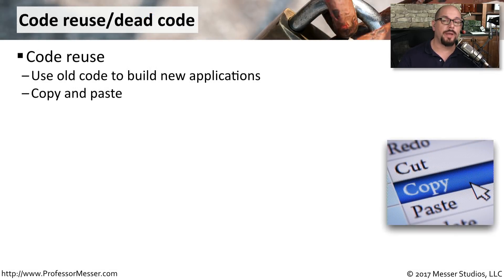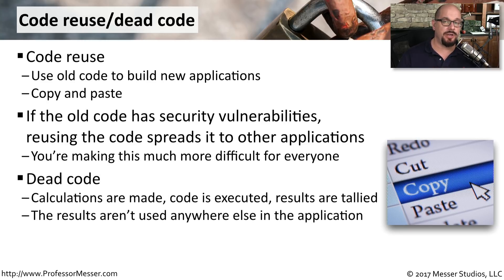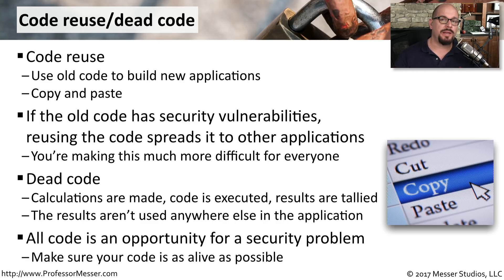A lot of application developers reuse code from one application to another. If there's a common process in both applications, it makes sense to copy the code instead of writing it from scratch. However, if the original code has security issues, copying it simply spreads those security problems to another application. Another challenge with code reuse is dead code — where your application runs an executable, makes some calculations, but nowhere in the code are you ever using the results of that calculation. Since introducing any code has the potential to create security problems, removing dead code effectively makes a more secure application.